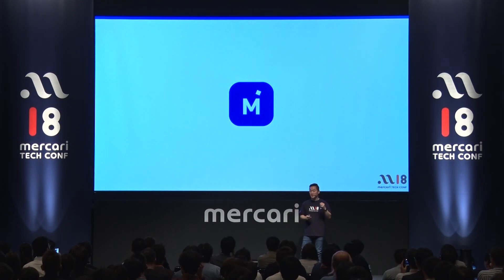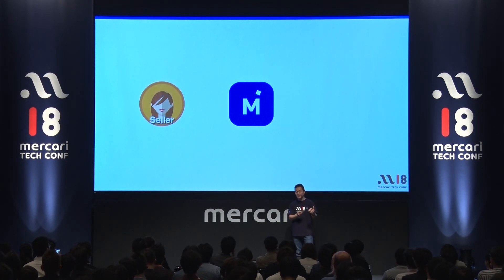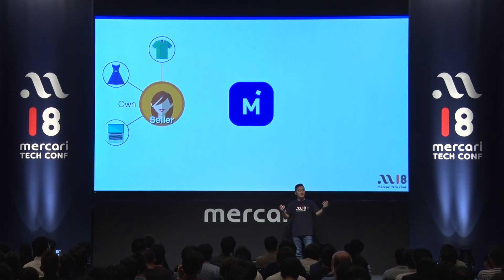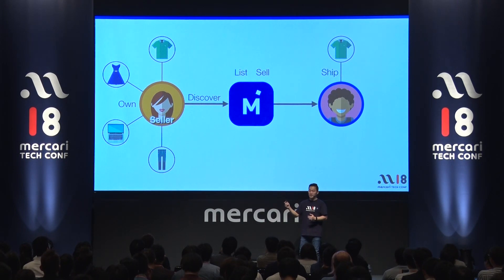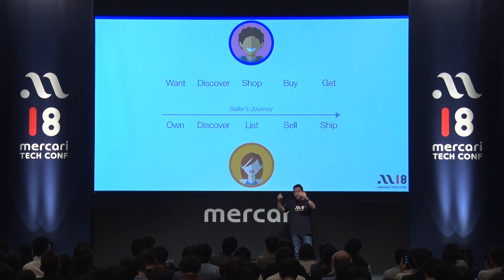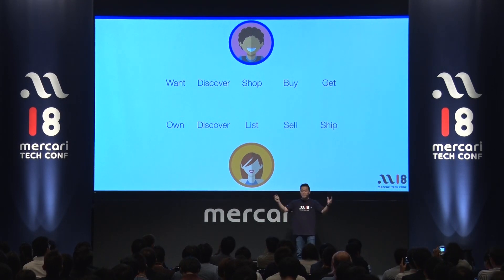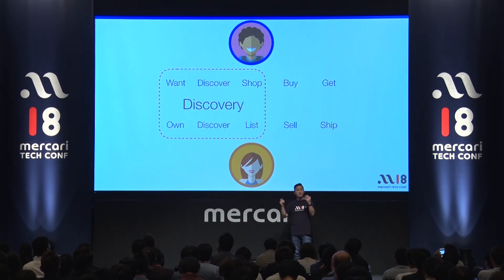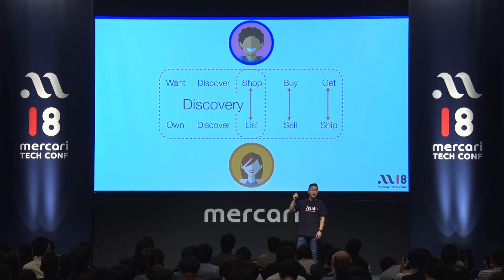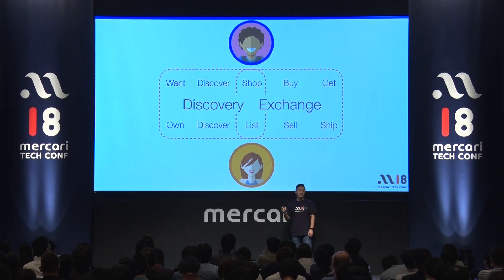One thing that's special about Mercari is that we also have a seller's journey. Here's a seller, and she owns lots of things that she keeps at home. Of course she discovers Mercari, and she knows that she can sell it there. So there's a list, you sell, and you ship — that's the seller's journey. If you look at the seller and the buyer, there's a lot of parallel between the two. Seller owning and wanting, discovering Mercari, listing and shopping — that actually is the discovery, one of the core things that we do. Next is listing, shopping, selling, buying, and shipping and getting — that's the exchange.